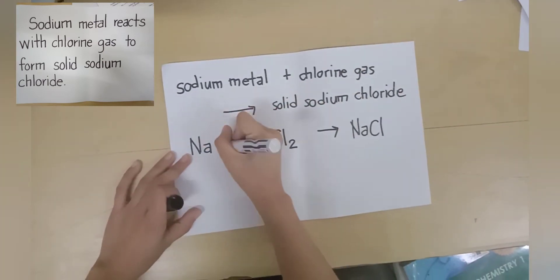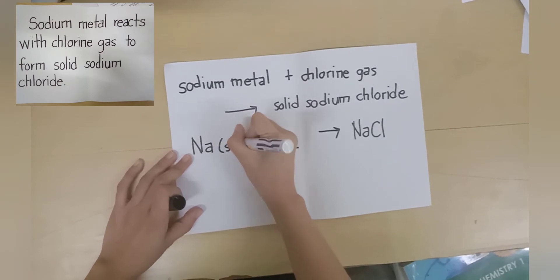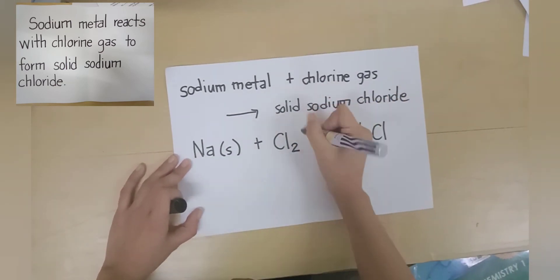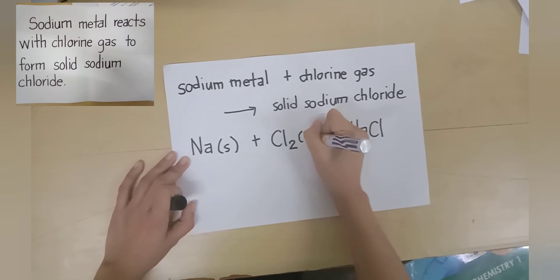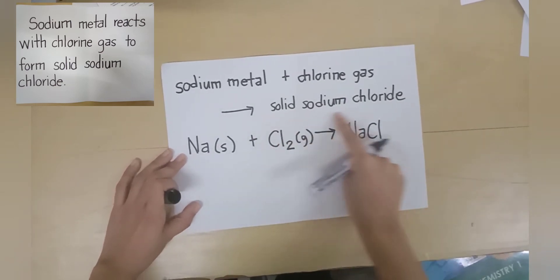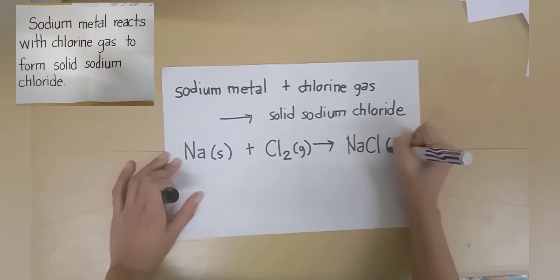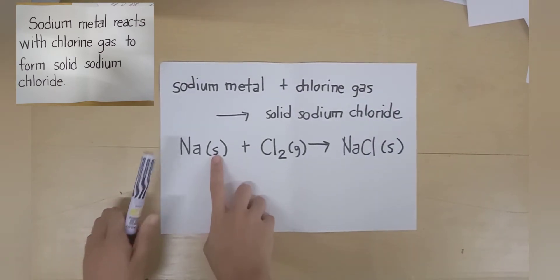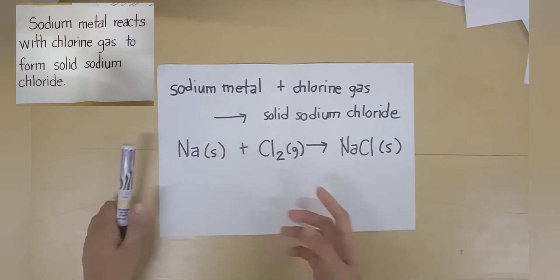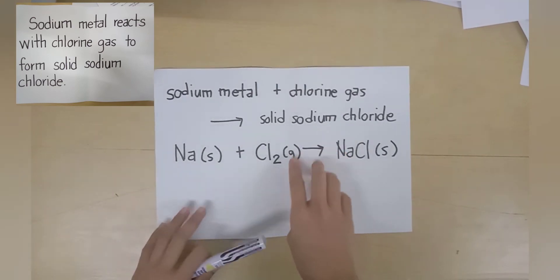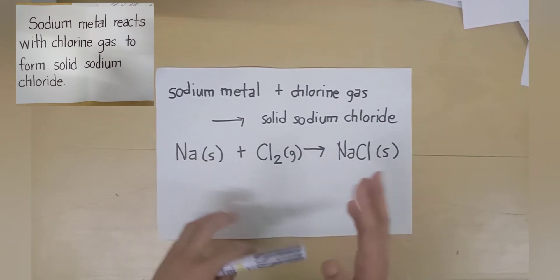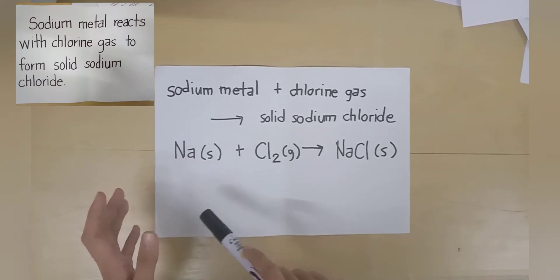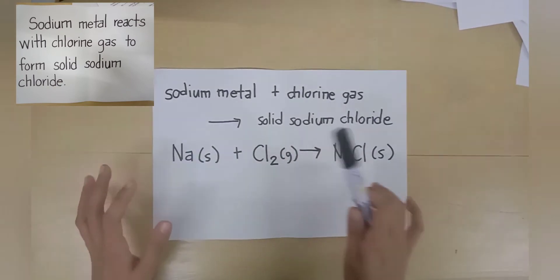When we say 'metal,' sodium exists in solid state; 'gas' for chlorine in gaseous state; and 'solid' for sodium chloride. As you can see, we have the small letter 's' enclosed in parentheses, and then letter 'g' enclosed in parentheses. This represents the state of these substances in this chemical equation.